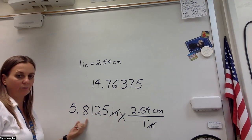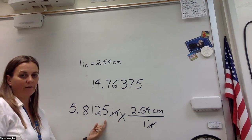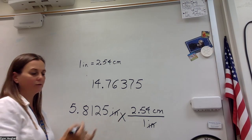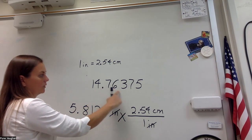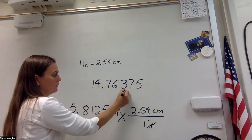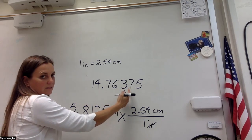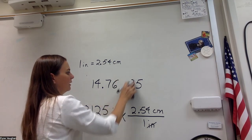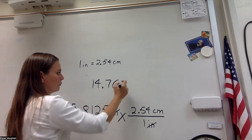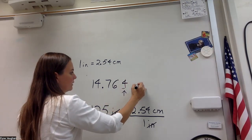This has 1, 2, 3, 4, 5 significant figures. So I'm going to go 1, 2, 3, 4, 5. This is the place where I need to round. Next to that 3 is a 7. So that 7 is going to make the 3 round up. And so my final answer is going to be 14.764 centimeters.